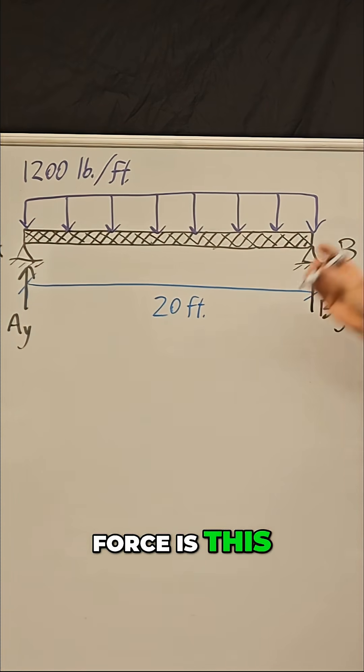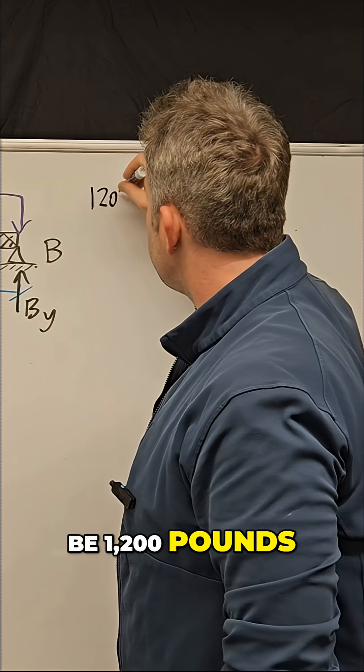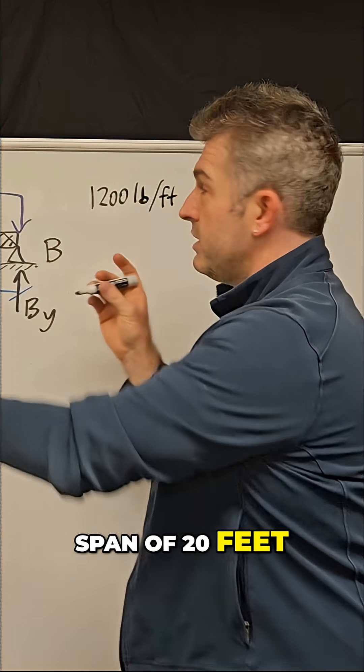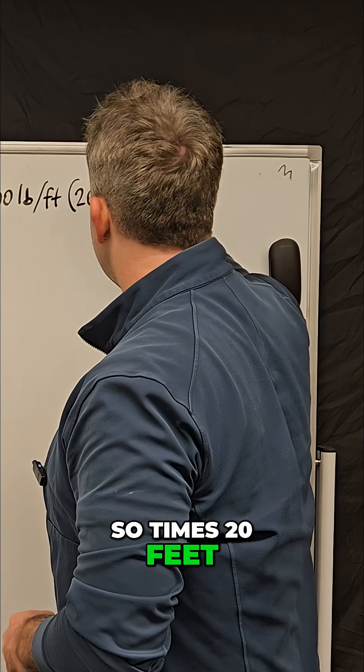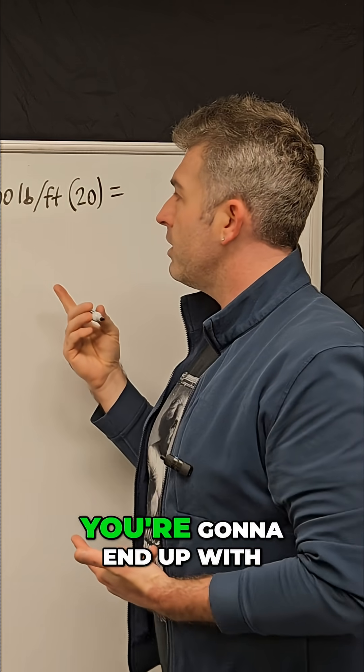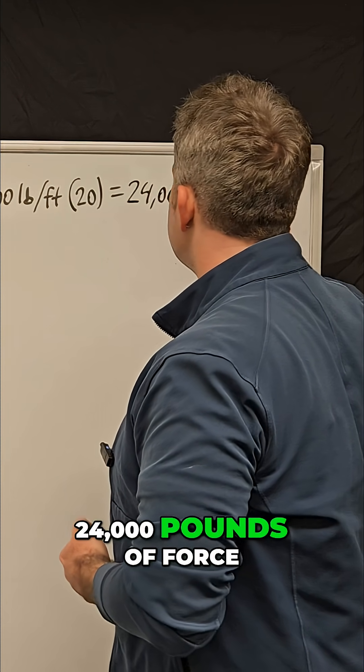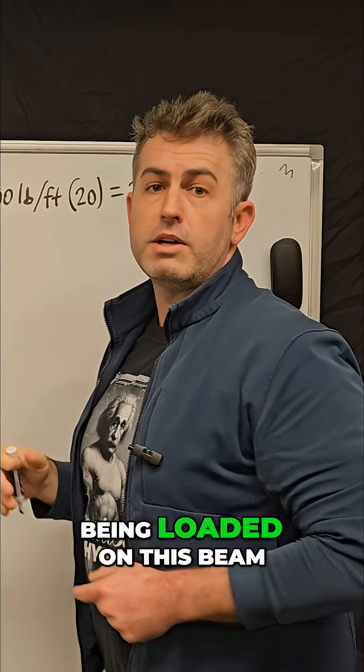So how much total force is this? Well, it's just going to be 1,200 pounds per foot over a span of 20 feet, so times 20 feet. And so if you do the math, you're going to end up with 24,000 pounds of force being loaded on this beam.